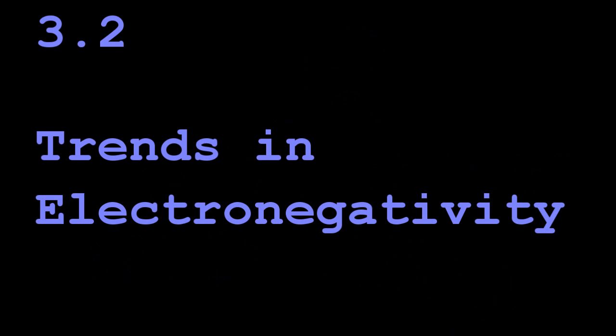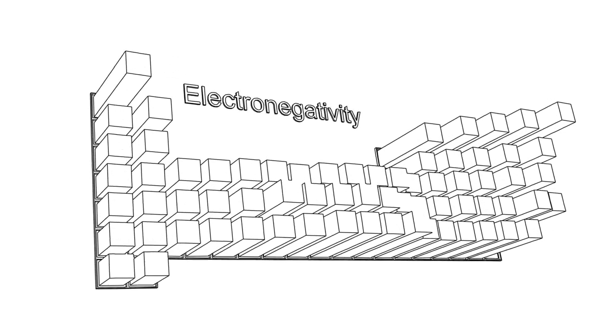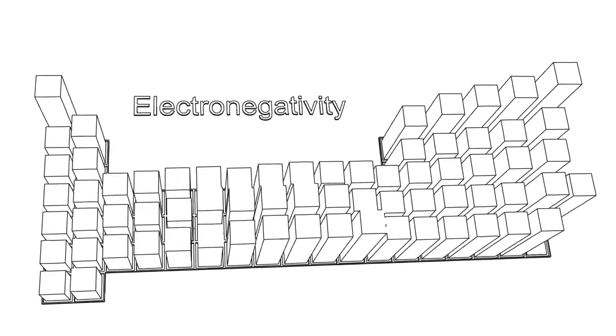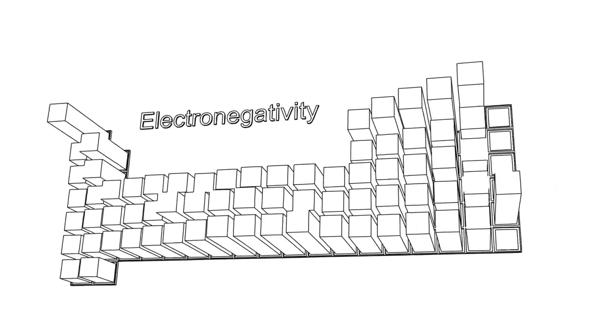3.2 trends in electronegativity. Well here's the electronegativity graphed onto the periodic table and you can see there is a general trend as you go across to the right electronegativity increases and as you go down generally it decreases.